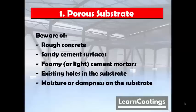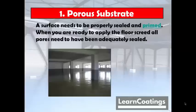Another factor is moisture or dampness, which may also produce bubbles in the epoxy screed. Have a look at this picture — this is an example of a nicely primed and sealed floor that is ready to be coated with epoxy screed. It's very important that if you're going to do a self-leveling floor, two or three millimeters, you want to make sure that the floor has been properly sealed and primed in advance. Otherwise, you will run the risk of having many bubbles.